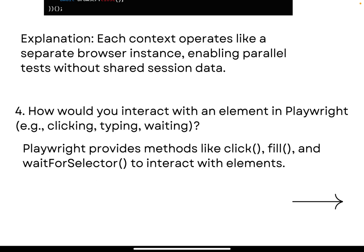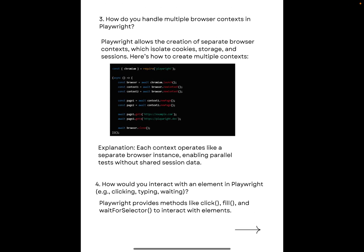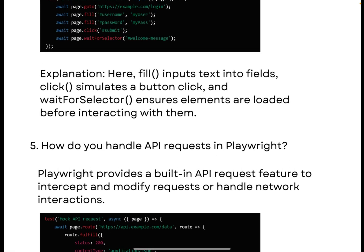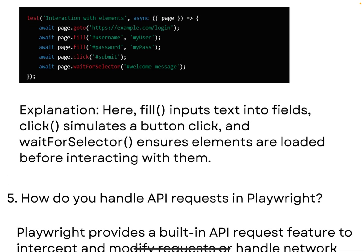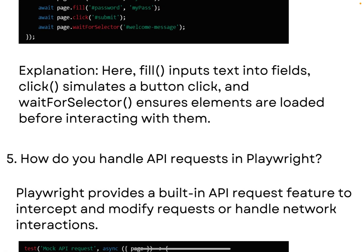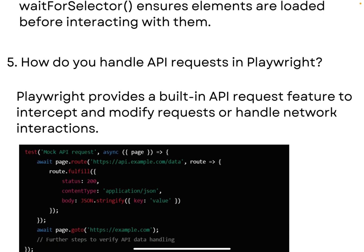The next question is: how would you interact with an element in Playwright? Playwright provides methods like `.click()`, `.fill()`, and `.waitForSelector()` to interact with elements. For example: `await page.goto()` launches the URL, `.fill()` fills in a username or input field, and `.click()` clicks a button. The `fill()` method handles input text, `click()` simulates a button click, and `waitForSelector()` ensures elements are loaded before interacting. Playwright also has a built-in wait mechanism, so even without explicit waits it often works fine.